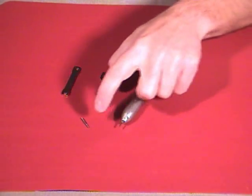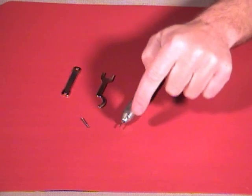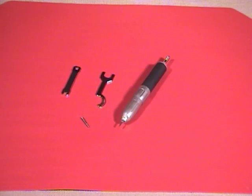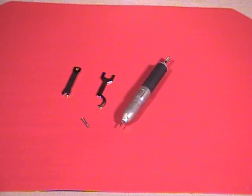You're going to need a new collet if your handpiece won't hold the burrs. If your turbine seems to be running okay but the burrs come out on you after a lot of use, then you're going to need a new collet.